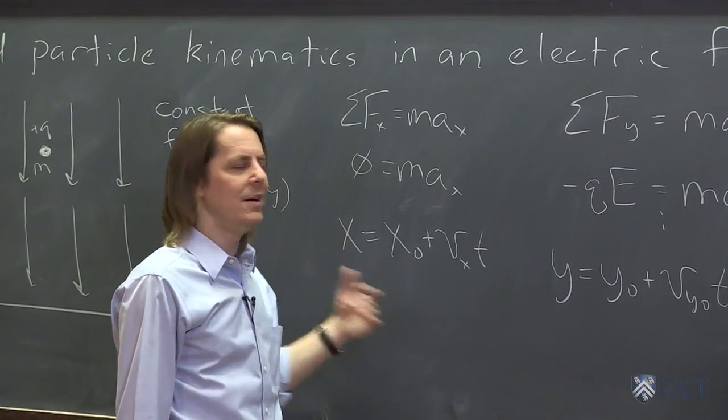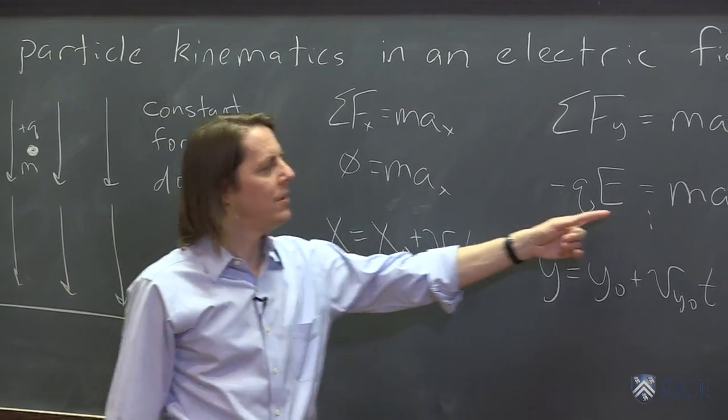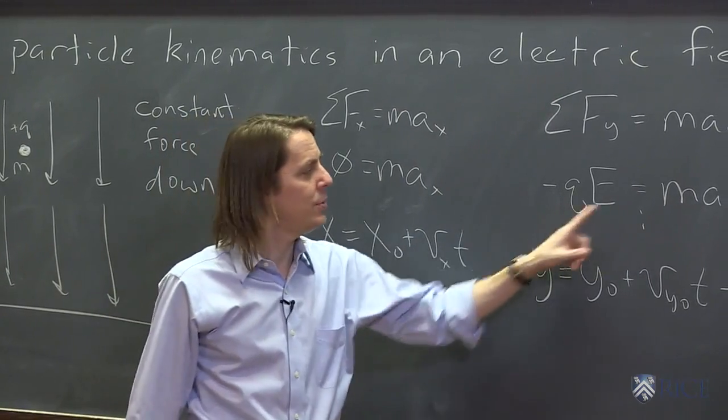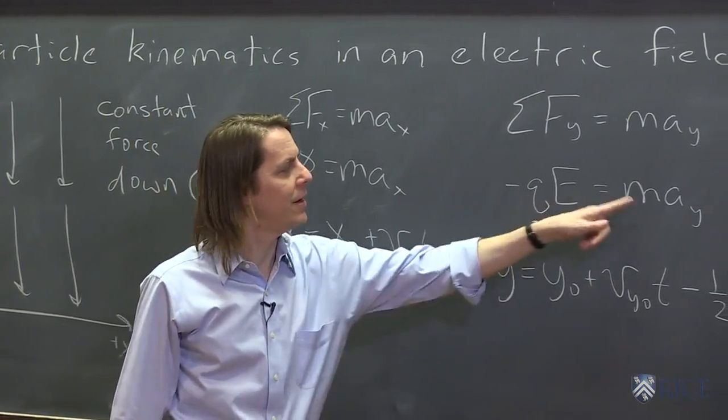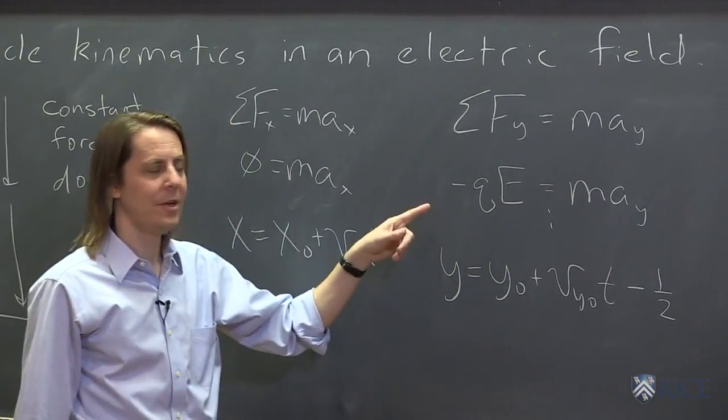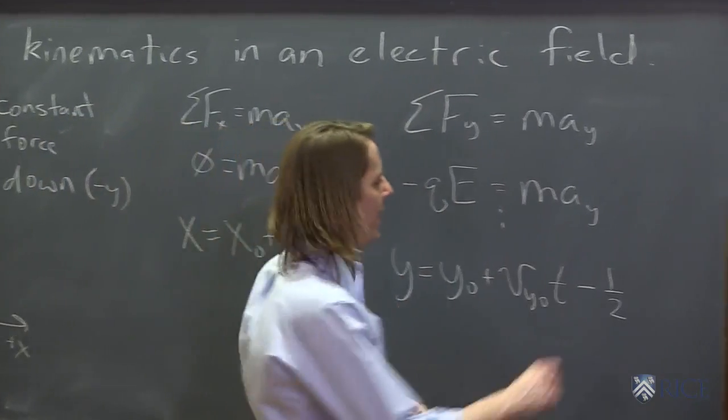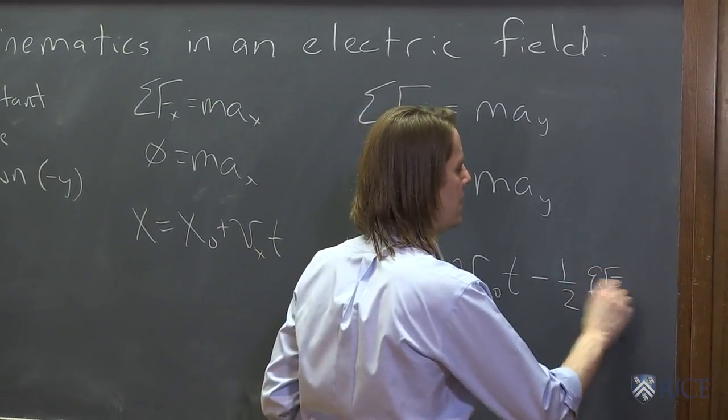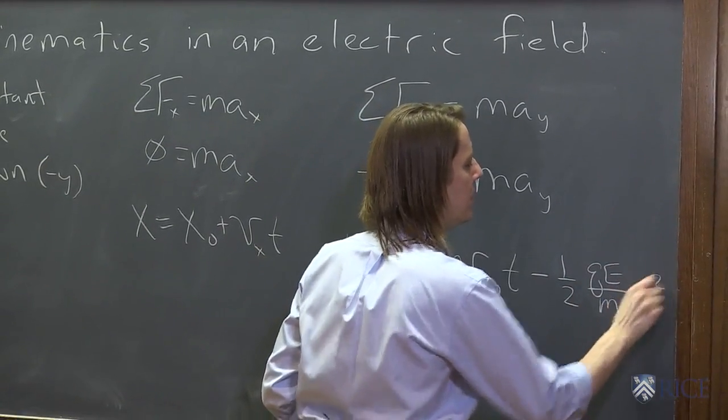So in this case, it's not g. It's the acceleration due to electrostatic force. It's qE over m. We just divide the m over to figure out what the acceleration is. It's not just a constant g. So minus one half qE over m t squared.